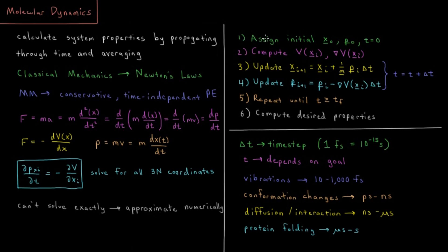So our first step is to assign some initial coordinates, as we mentioned in the geometry optimization video. Assign some initial velocities, that is momentum, as we mentioned in the thermal energy video. And set the time equal to zero.